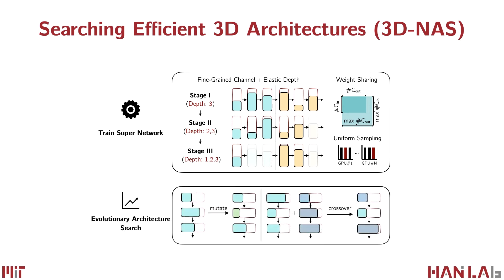We then run evolutionary architecture search to find the best subnetwork under a MACs constraint. Thanks to the supernetwork trained with weight-sharing and progressive depth shrinkage, we can directly grab the weights from the supernetwork without retraining. This greatly saves the cost of 3D NAS.